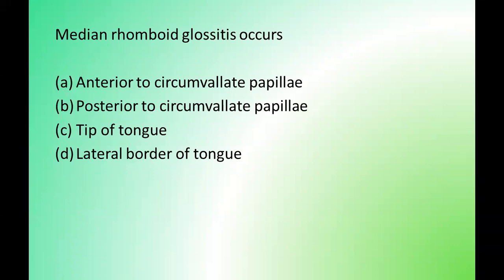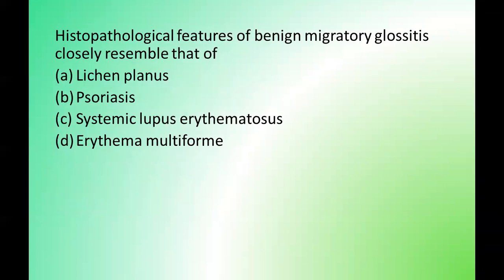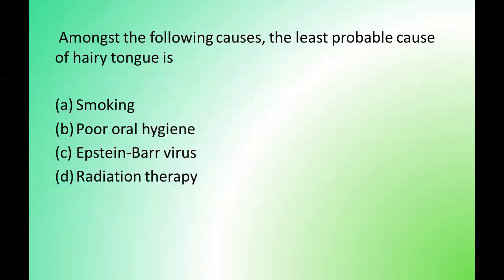Next question: which of the following is the synonym of fissured tongue? Options are: lingua nigra, scrotal tongue, geographic tongue, lingual varices. The correct answer is option B — scrotal tongue. Next question: median rhomboid glossitis occurs where? Options are: anterior to circumvallate papillae, posterior to circumvallate papillae, tip of tongue, lateral border of tongue. The correct answer is option A — anterior to circumvallate papillae. Next question: the pathological features of benign migratory glossitis closely resemble that of which condition? Options are: lichen planus, psoriasis, systemic lupus erythematosus, erythema multiforme. The correct answer is option B — psoriasis.